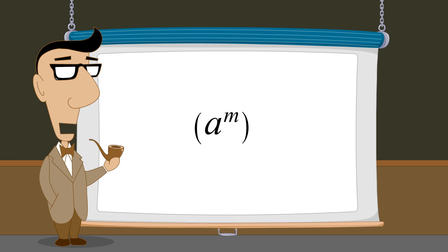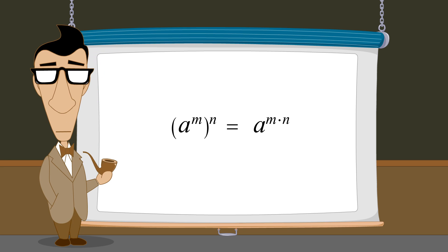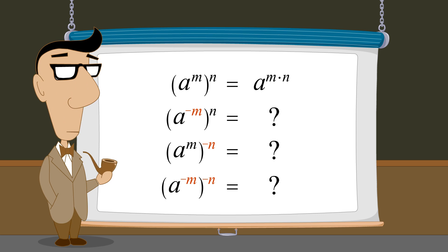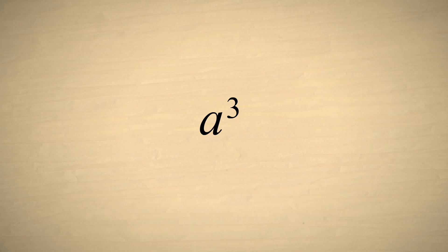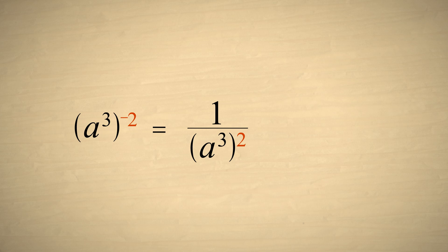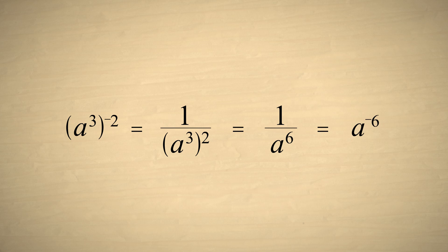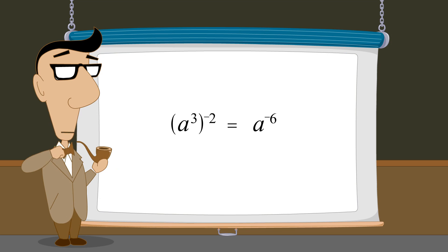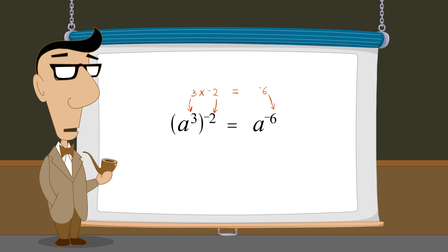So far we have seen that any term with an exponent of m, raised to the nth power, is equivalent to that term with the two exponents multiplied. But what if one or both of the exponents are negative? Let's see what happens when we take a cubed and raise that expression to the negative second power. Remember that anything with a negative exponent is equivalent to one over that thing with the same positive exponent. So instead of a cubed to the negative two, let's write one over a cubed to the positive two. Multiplying the exponents, we get one over a to the sixth power, which is the same as a to the negative sixth power. Since three times negative two is negative six, our rule of multiplying exponents works.